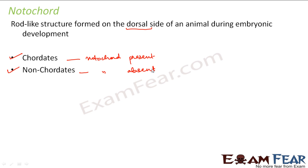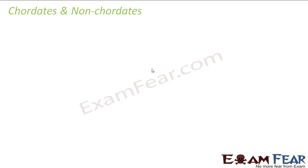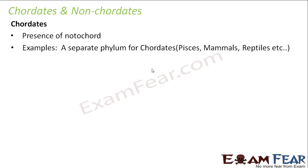This is again a very important parameter. Let us quickly see what chordates and non-chordates are. Chordates have presence of notochord. There is a separate phylum for chordates — you remember the 10 phyla under the animalia kingdom; the last phylum was chordates. Inside chordates there is again a huge variety, with many classes like reptiles, amphibia, and mammals, all falling under the category of chordates.